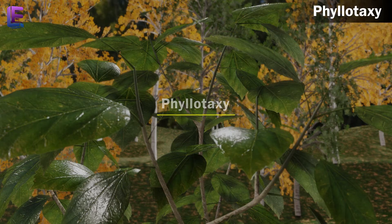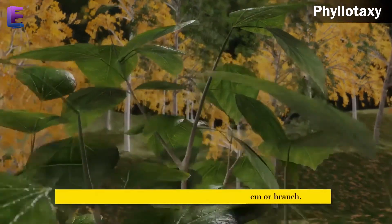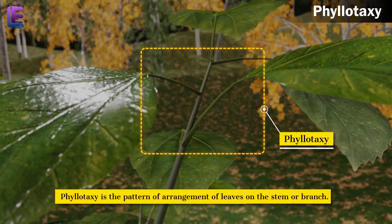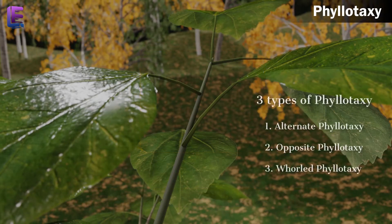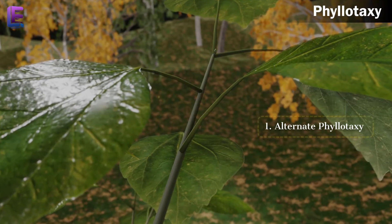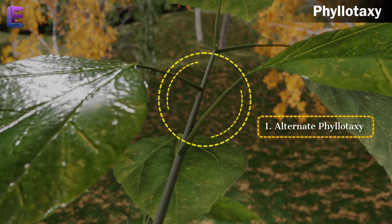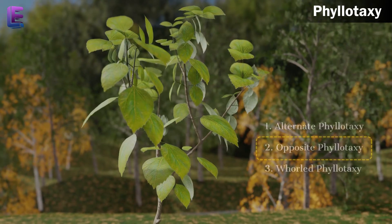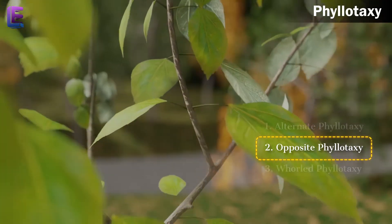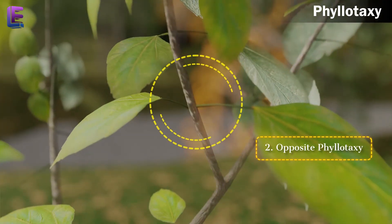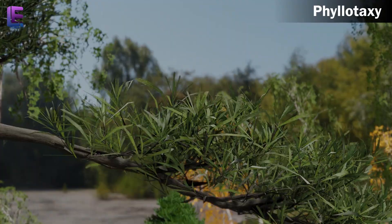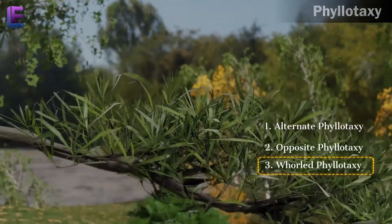Phyllotaxy. Phyllotaxy is the pattern of arrangement of leaves on the stem or branch. This is of three types: 1. Alternate phyllotaxy, example Hibiscus. 2. Opposite phyllotaxy, example Calotropis. 3. Whorled phyllotaxy.